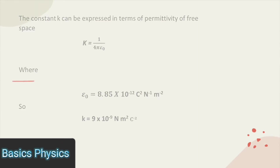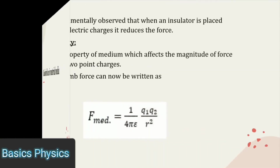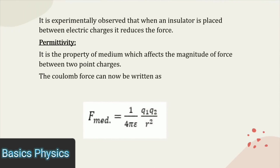Coulomb's Law in material media. It is experimentally observed that when an insulator is placed between electric charges, it reduces the force. Permittivity is the property of a medium which affects the magnitude of force between two point charges. The Coulomb force can now be written as F is equal to 1 over 4 pi E, times Q1 Q2 divided by R square, where E is the permittivity of the medium.